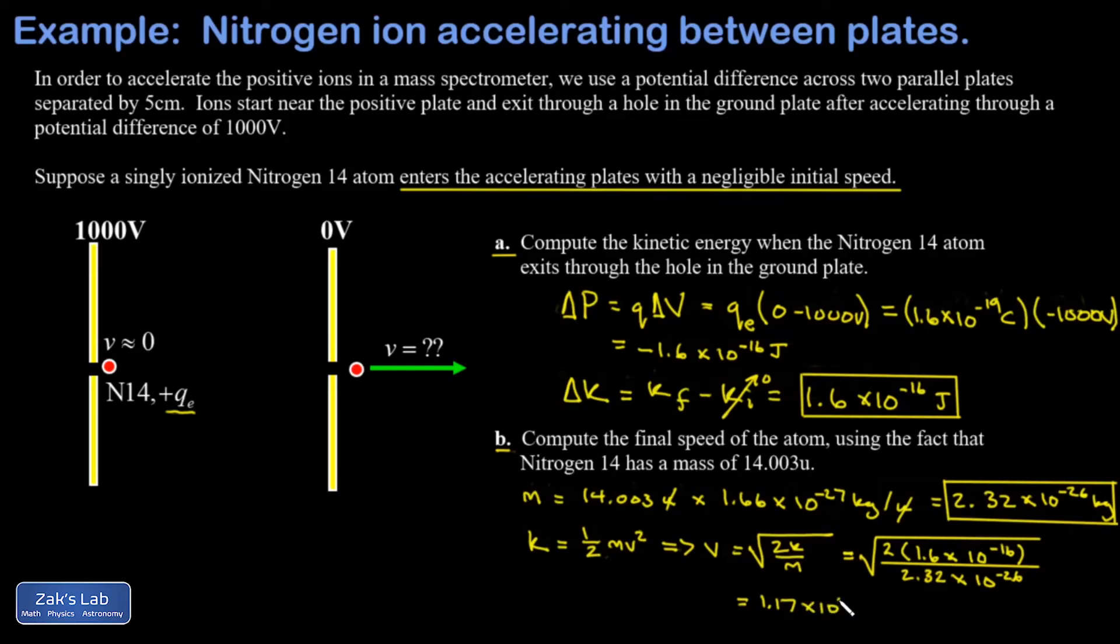There's a couple assumptions in this calculation that I want to address. One is that we can ignore the mass of the missing electron from ionizing this atom. The mass of an electron is like a thousandth the mass of a nucleon, so it's negligible in the calculation. The second point is we want to make sure we aren't dealing with relativistic speeds here. The speed of light is on the order of 10 to the eighth meters per second, so we're staying well below that threshold.